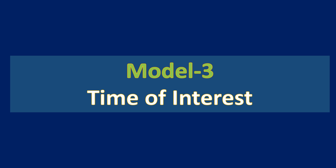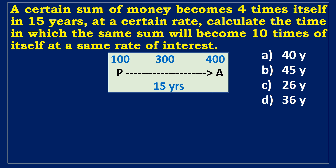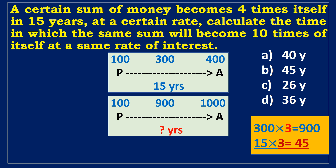Model 3: Time of Interest. A certain sum of money becomes 4 times itself in 15 years at a certain rate. Calculate the time in which the same sum will become 10 times itself at the same rate. Suppose the principal is 100 rupees. The sum grows to 400 rupees in 15 years, so SI = 300 rupees. For the sum to become 10 times, the final amount is 1000 rupees, so SI = 900 rupees. Since 900 is 3 times 300, and 300 was earned in 15 years, the required time is 3 × 15 = 45 years.